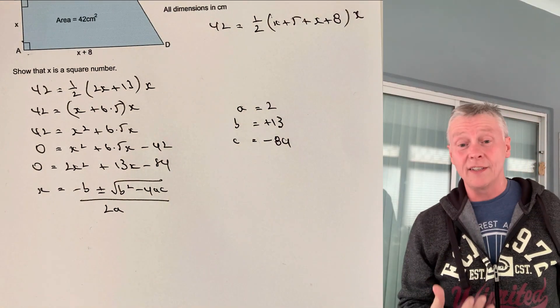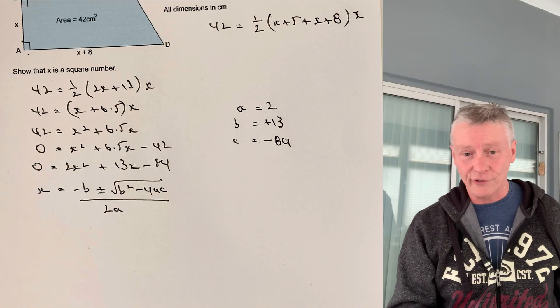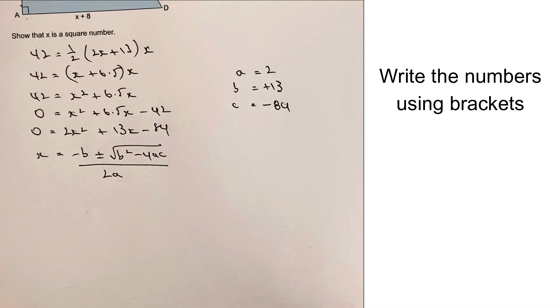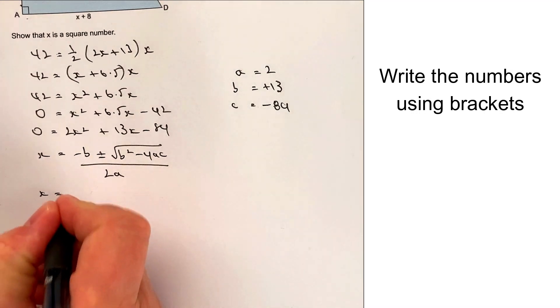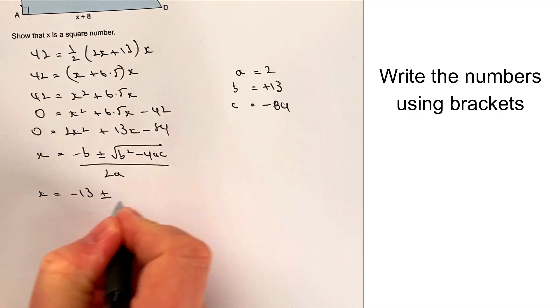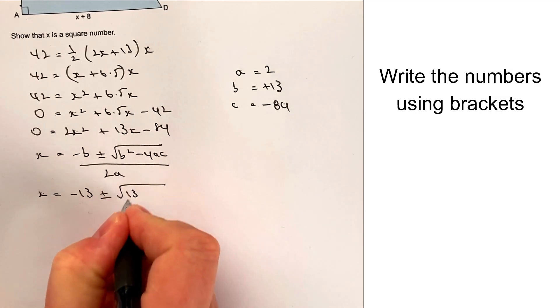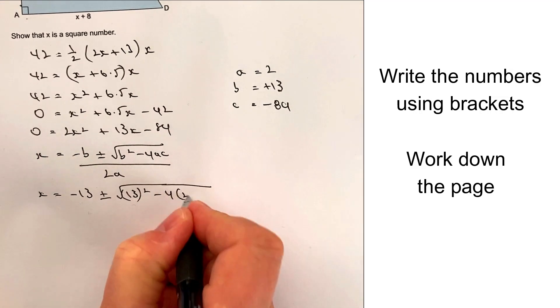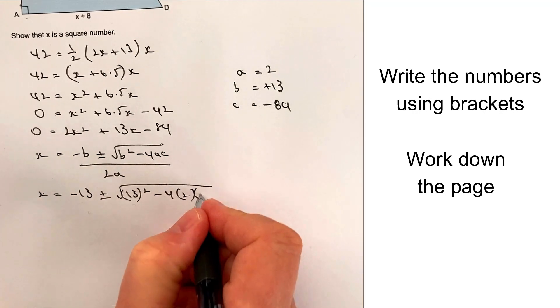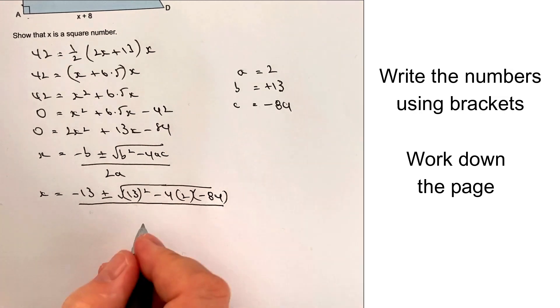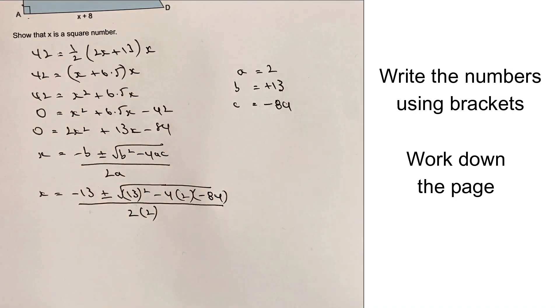And then really, it's just a case of taking these numbers and putting them directly into the formula. So let's have a go at doing that. And I'm going to write this as x equals, so minus b is going to be minus 13 plus or minus the root of 13 squared minus 4 times a, which is 2, and c, which is minus 84. And that's all divided by 2 times 2.